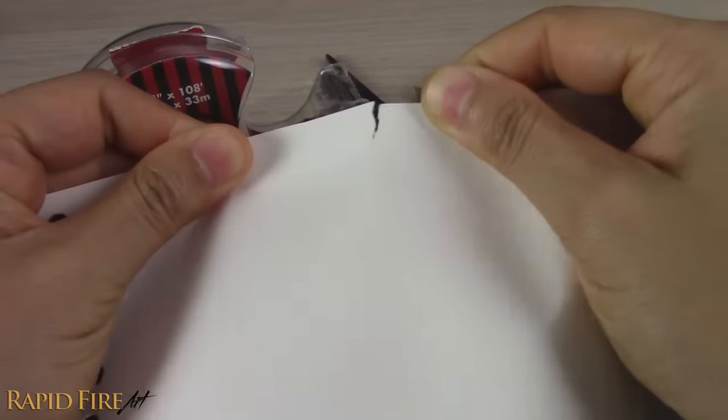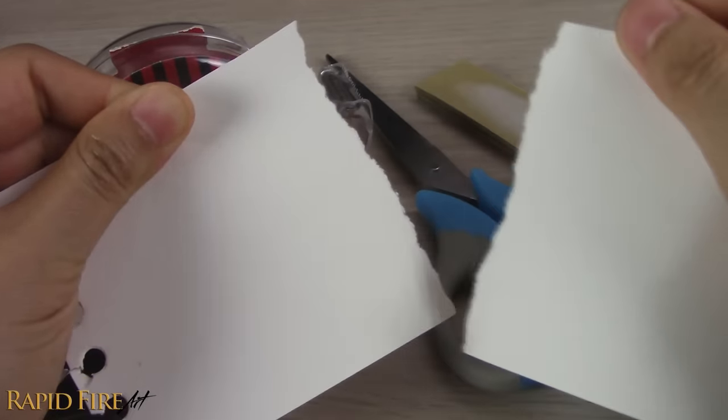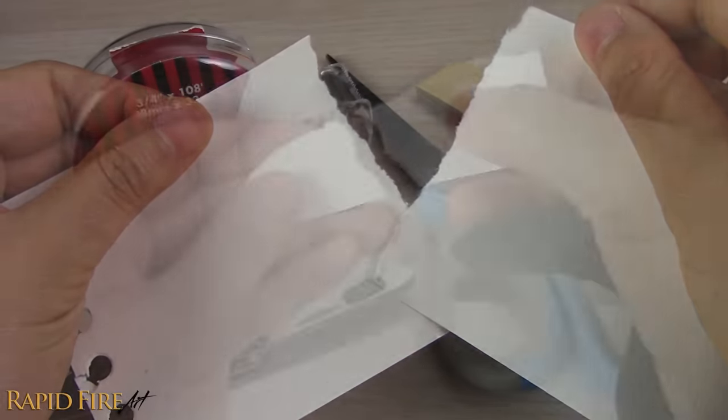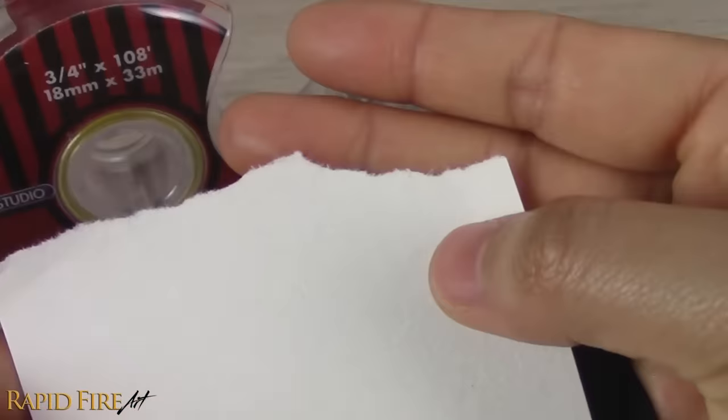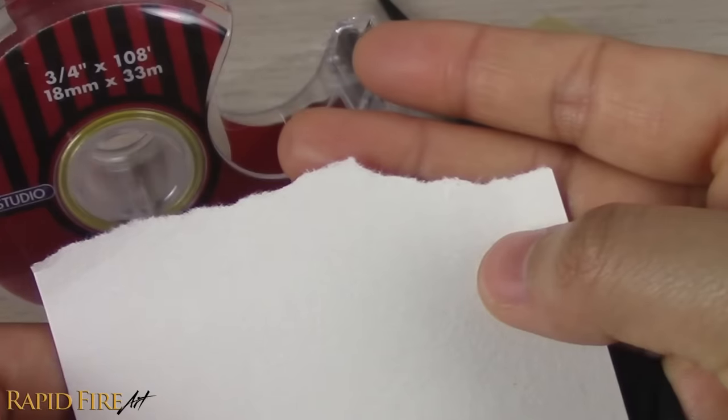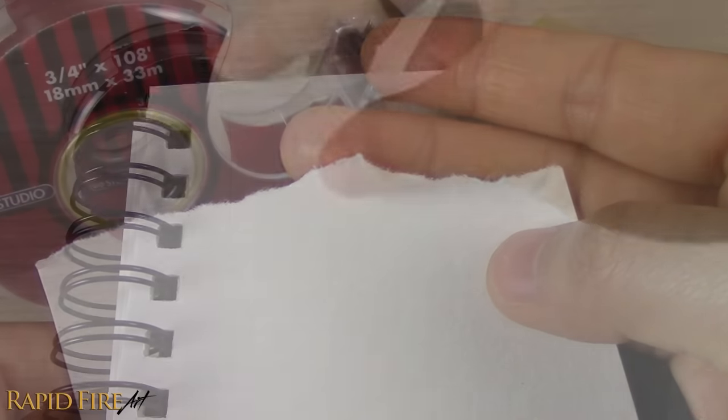You can tell how soft a paper is by looking at how frayed a ripped edge is. I'd recommend trying this tutorial with various types of paper to find the one that best suits your needs. Grab your paper of choice.